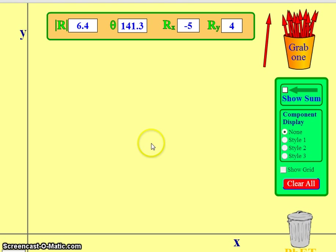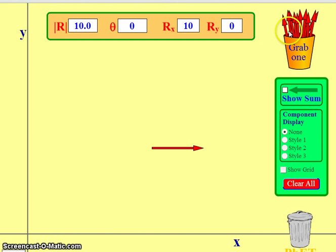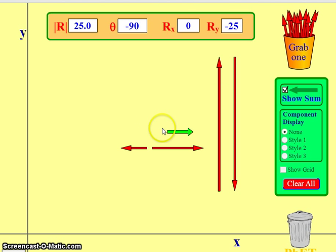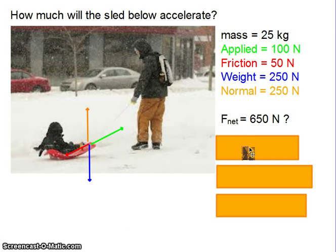If I have 100 Newtons forward and 50 Newtons backwards, and on that object if I then have 250 up and another 250 down, you can see that the 250 up and the 250 down are just going to cancel each other out. So if I add all of these up, I'm going to get an overall force that's just 50 Newtons forward. It's not 650 because these 250 up and down cancel out.